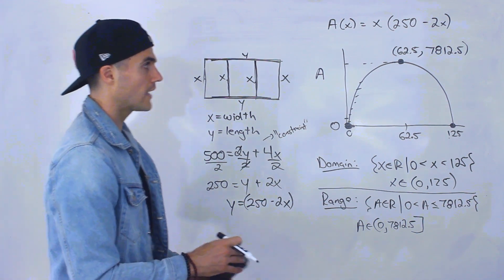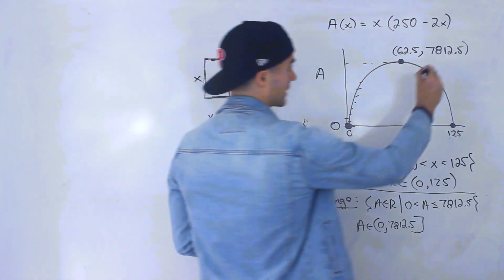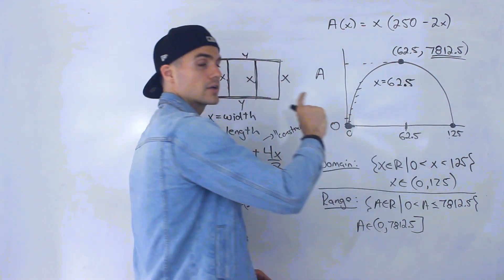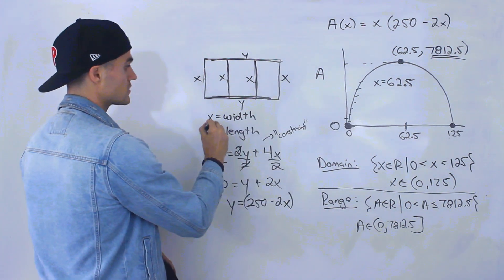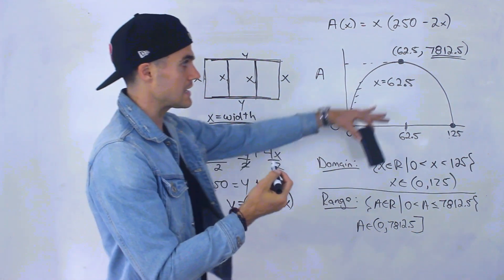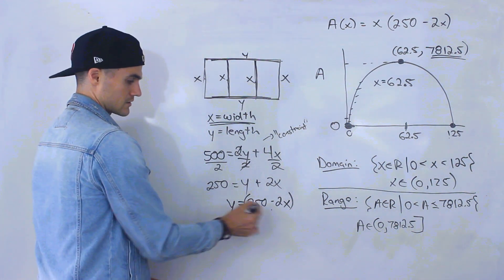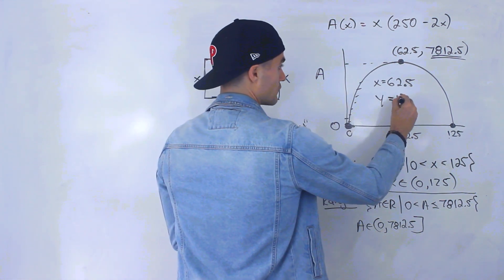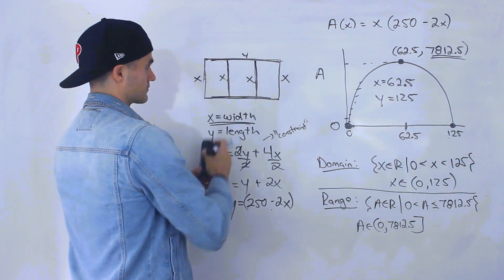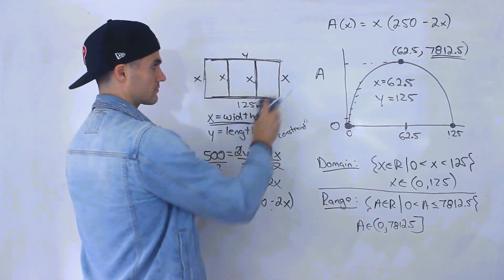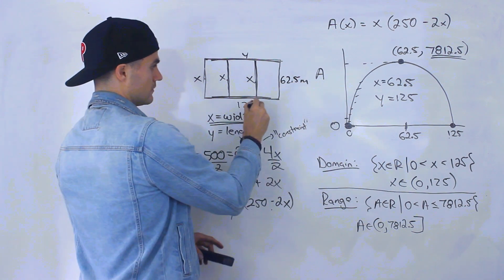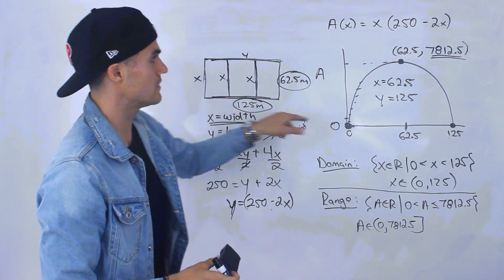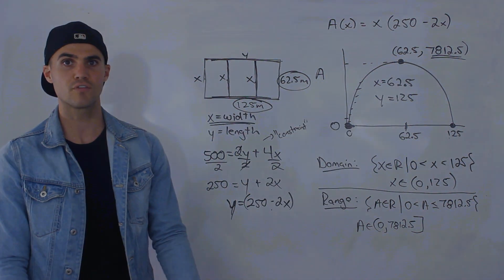Part C asks what dimensions give the maximum area. The maximum occurs at the vertex, where x equals 62.5. Since x is the width, the width is 62.5 meters. To find the length y, we plug x = 62.5 into y = 250 minus 2x, giving y = 125 meters. So dimensions of 125 meters by 62.5 meters give the maximum area. You can verify: 125 times 62.5 equals 7,812.5 square meters.